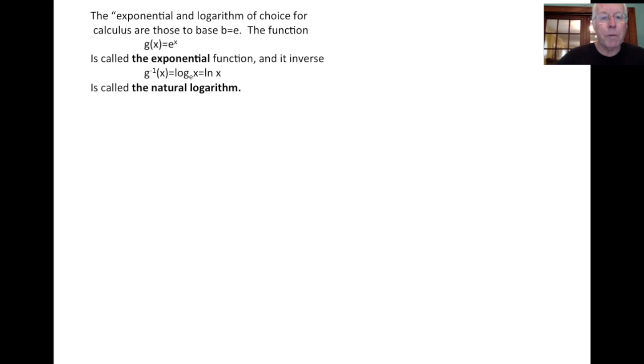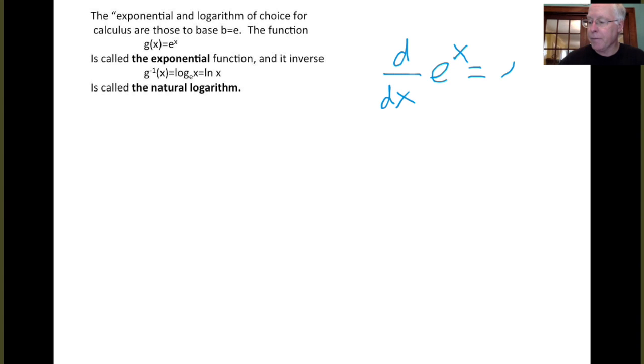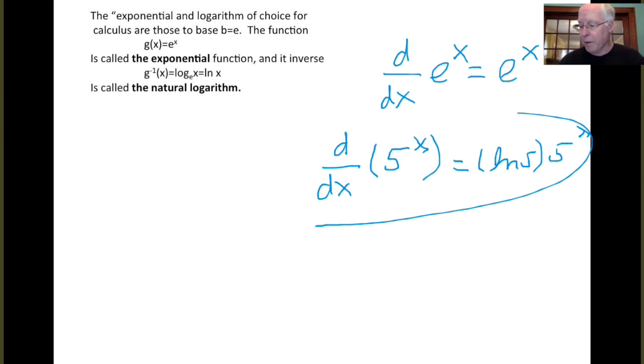Now, when you do calculus, the exponential and logarithm of choice are those to base b equals e. We've encountered e before, and we've studied the exponential function e to the x. We like to work with e to the x because of all the exponentials that has the simplest derivative. As we saw earlier, the derivative of e to the x is just e to the x. When you take the derivative of something to a different base, like 5 to the x, you're going to find the answer there is the log of 5 times 5 to the x. That is the natural log. So this derivative is a little bit more complicated than this one, so we tend to work with this one in calculus because it's so simple.